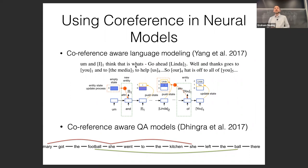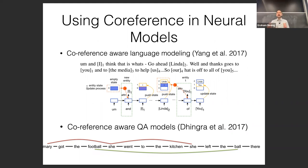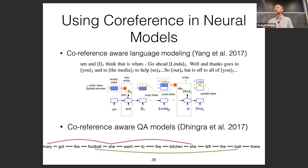There are several examples of using co-reference in neural models: co-reference-aware language modeling, co-reference-aware QA models, and others. However, directly incorporating co-reference into neural models has become less common, because modern pre-trained models with unsupervised pre-training are already quite good at resolving co-reference even without being explicitly trained to do so.